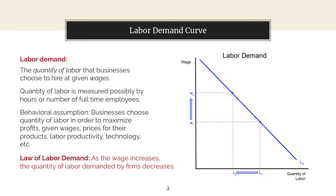We make the behavioral assumption that businesses choose the quantity of labor in order to maximize their profits, given wages, and given other factors, such as the prices of their products, labor productivity, and technology. The law of labor demand states that as the wage increases, the quantity of labor demanded by firms decreases.